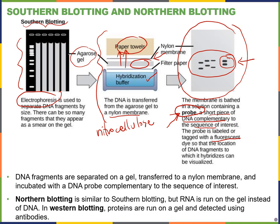For northern blotting, this is a very similar process except instead of DNA we're looking at RNA — you run RNA on a gel, transfer the RNA to a nylon membrane, and then add RNA probes. Finally, we also have western blotting, where we're looking at proteins. We run proteins on a gel, transfer them to a nylon membrane, and instead of probes, when we get to proteins we use antibodies — which are added to the nylon membrane to identify specific proteins of interest.